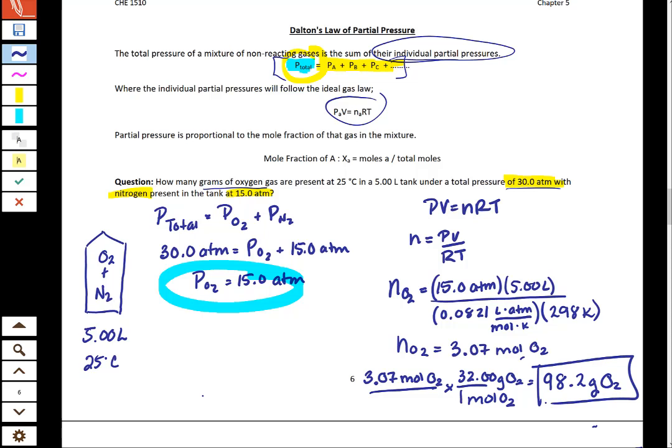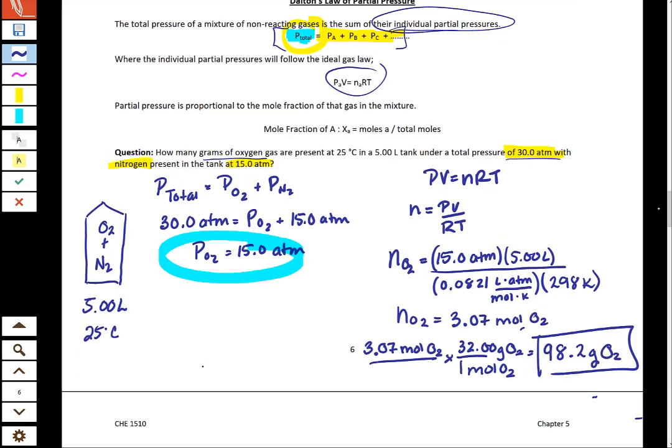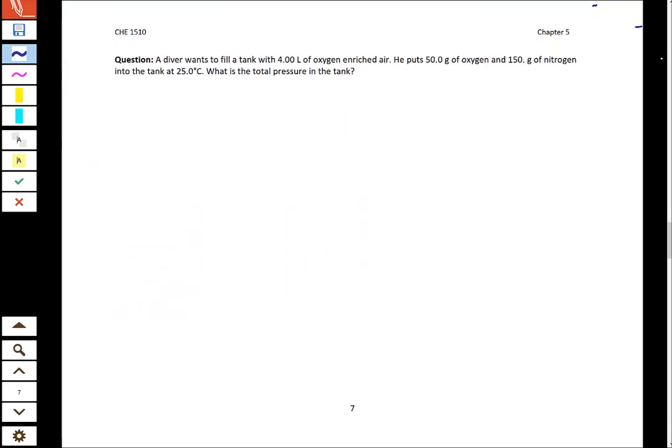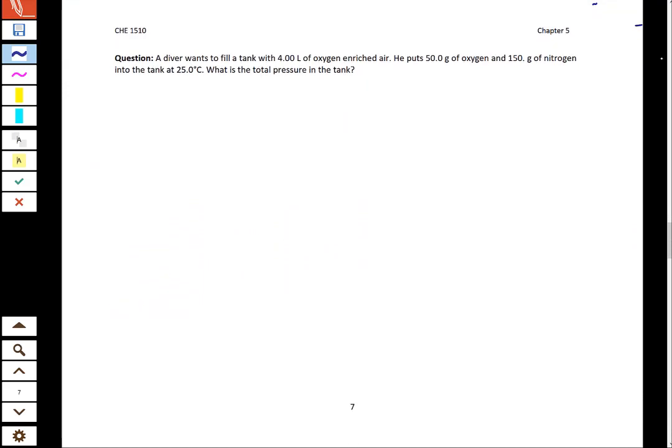So why don't we give one more of these a try? It's set up a little bit differently. The next one is going to employ Dalton's law of partial pressure but from kind of a different attack plan. We're gonna have a different route.